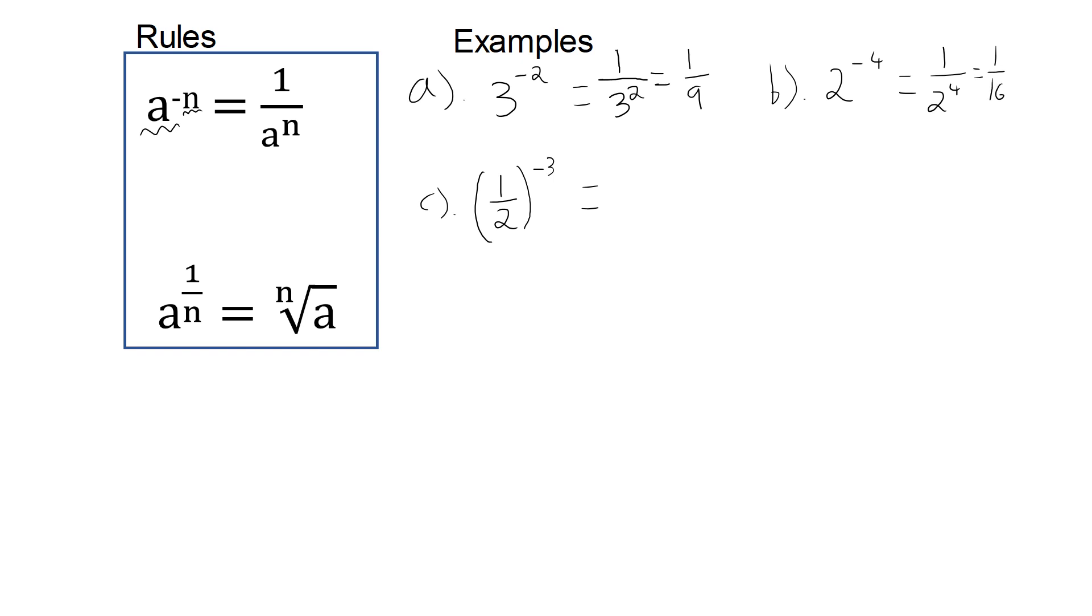In c, we have 1 half to the minus third. So a, this time, is equal to 1 half. So we have 1 over 1 half to the power of 3. Now, 1 half to the power of 3 is 1 half times 1 half times 1 half, which is 1 eighth. So we have 1 over 1 eighth.